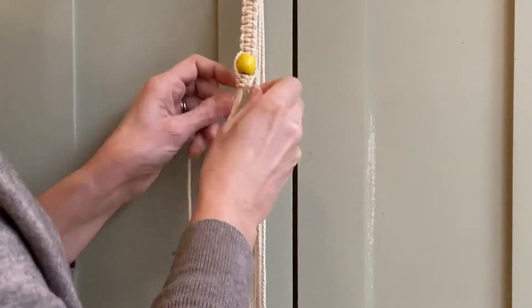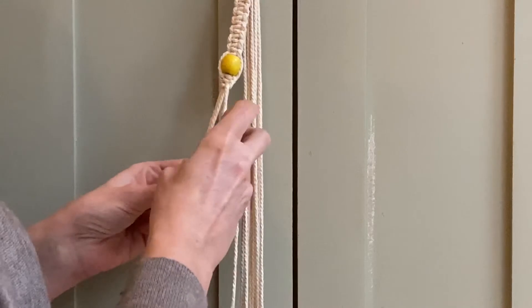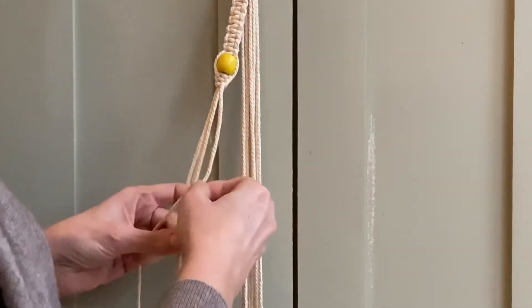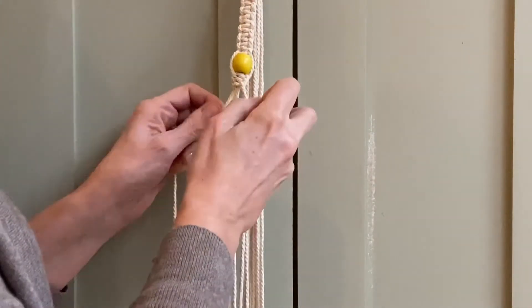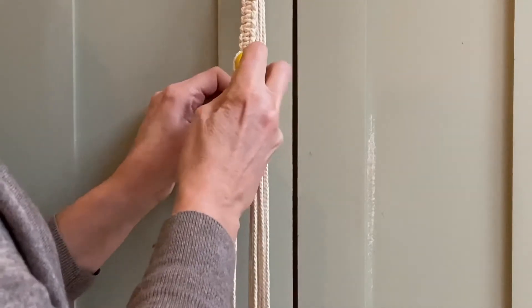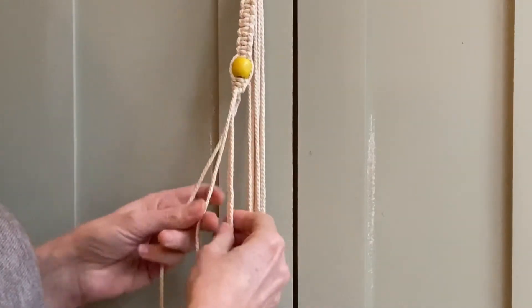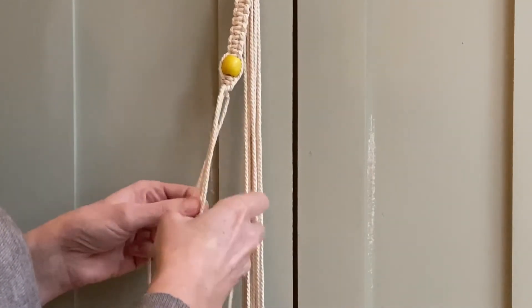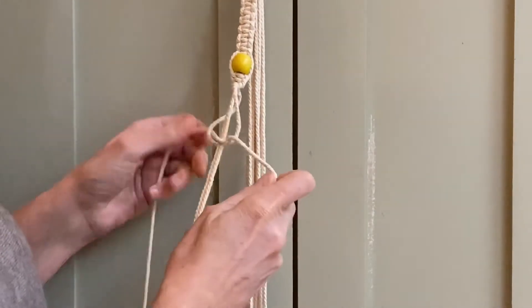This is kind of the best knot to do if you just want to switch off. If you're working in front of the telly, you can just switch off and just keep doing the reverse half square over and over, which will give you a really nice spiral or DNA look.